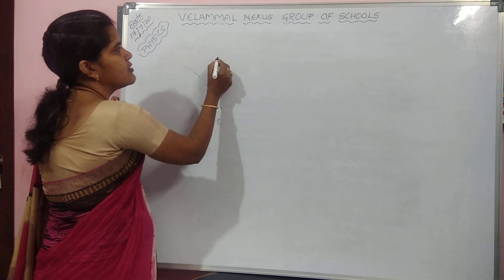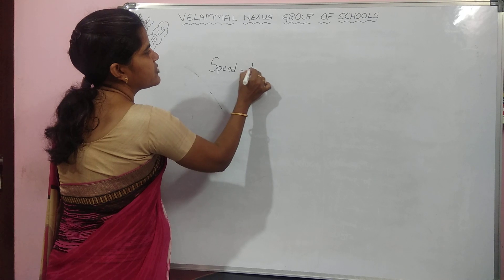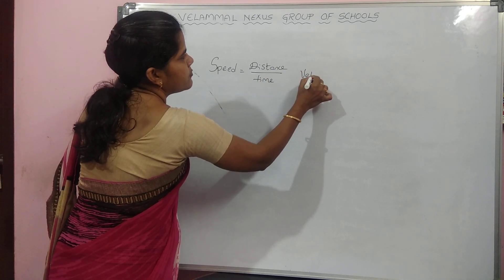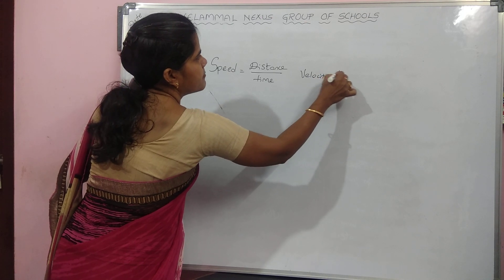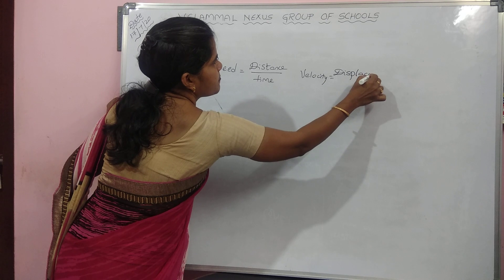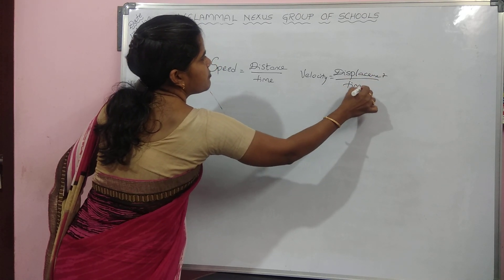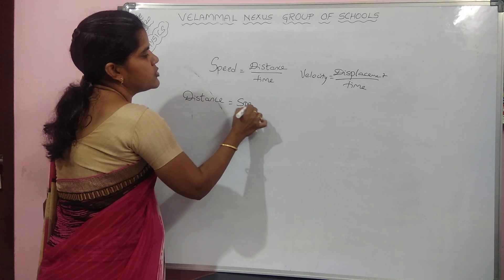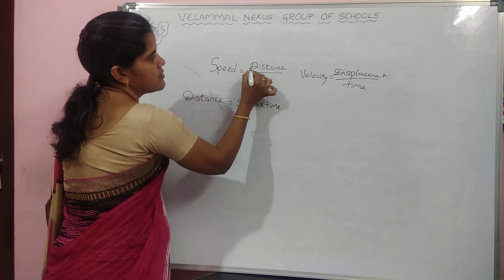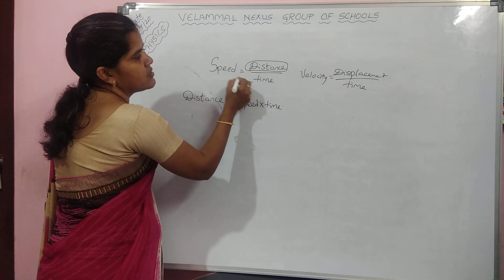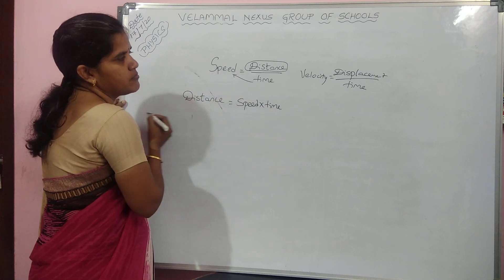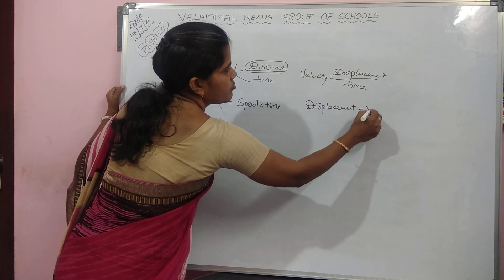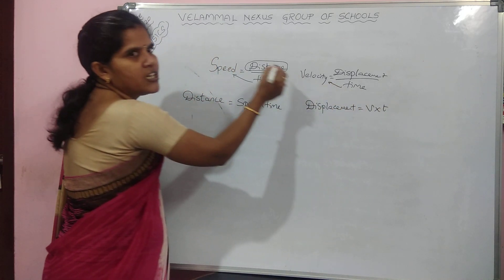Speed is equal to distance by time. Velocity is equal to displacement by time. If you want to calculate distance, distance is equal to speed into time. If you want this time, time which is dividing the distance will go this side and speed into time will come. Displacement is equal to velocity into time. Time will go this side and will multiply with velocity.